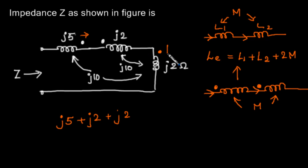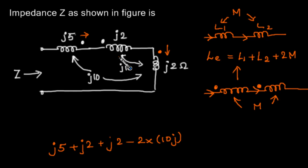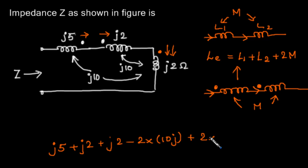Here the current is leaving the dotted terminal of L1, but for L2 the current is entering the dotted terminal, and for L3 the current is also entering the dotted terminal. That means the mutual inductance between L1 and L2 is opposing, giving minus 2 times 10j. For L2 and L3, the current enters the dotted terminal in both, so their mutual inductance is aiding, giving plus 2 times 10j.